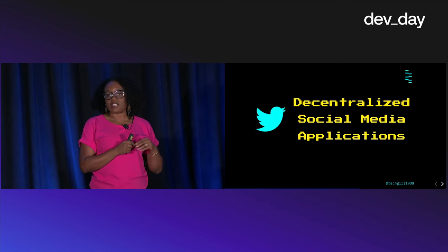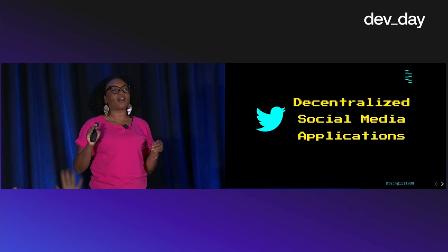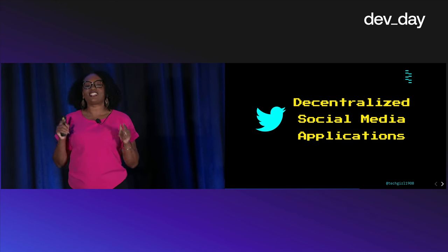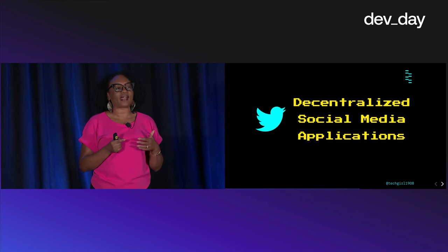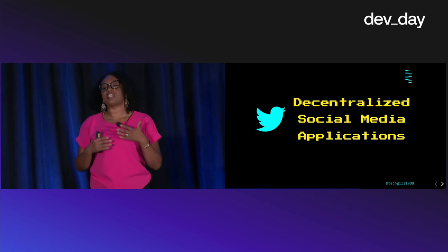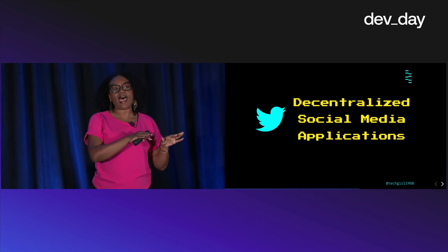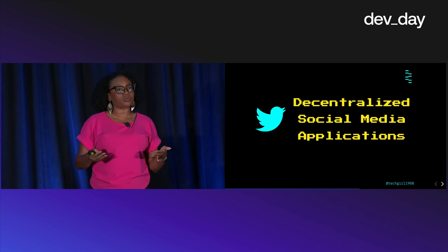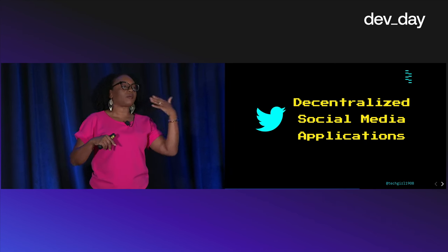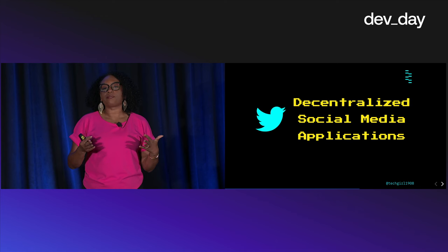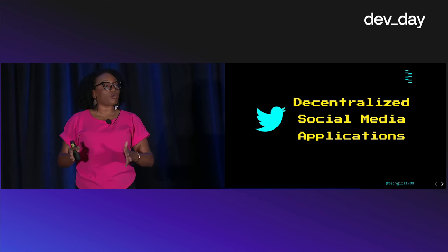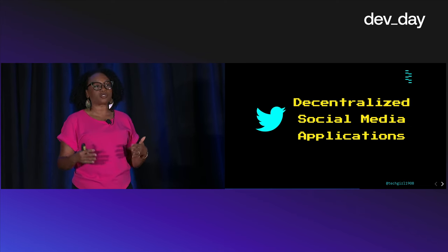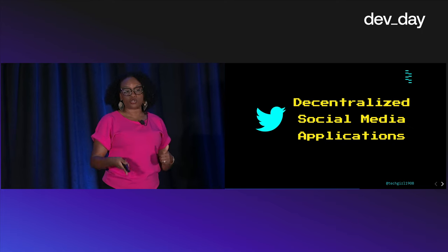Blue Sky is a good example of this — it's essentially a decentralized version of Twitter. Instead of things like your connections and your tweets being stored with the app, they're stored with you in your own personal data store. What this means is if decentralized Instagram or decentralized TikTok pop up, I can take my connections and my data and go to those apps with it intact. I don't have to start from zero because the data is stored with me.